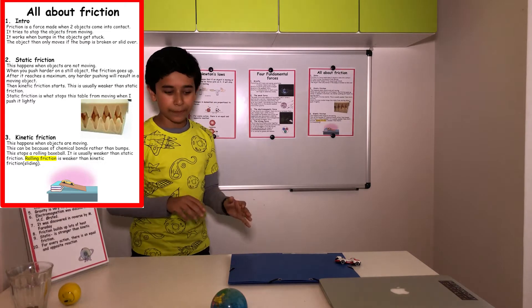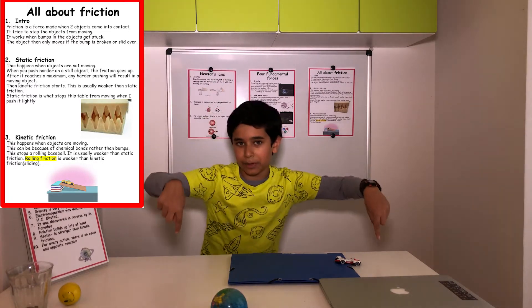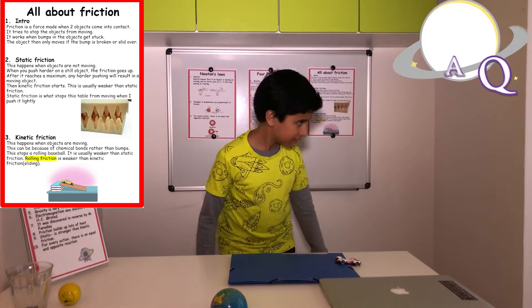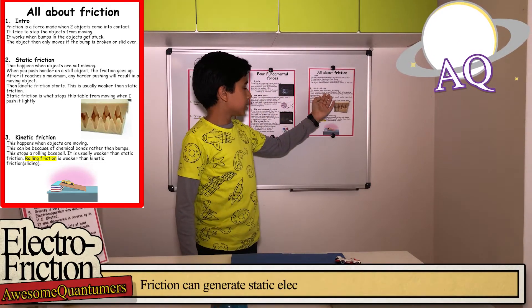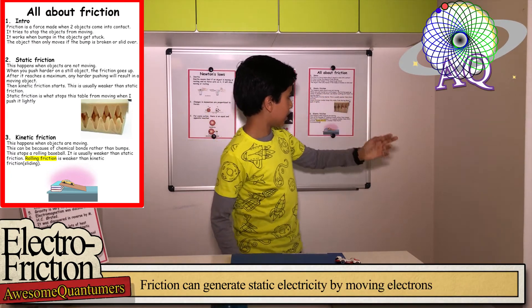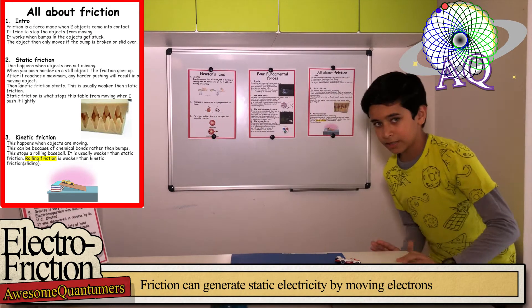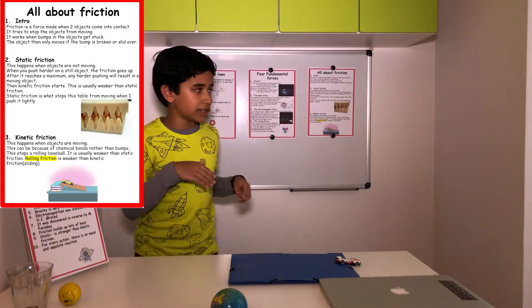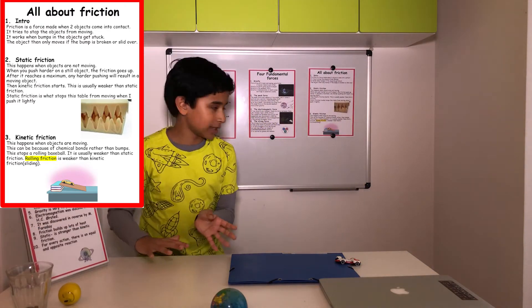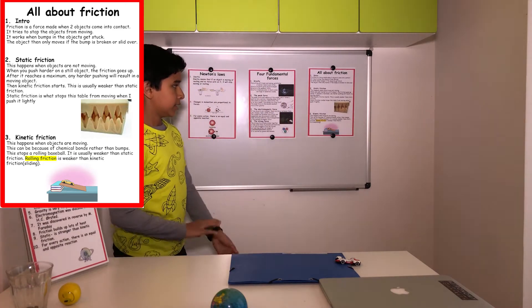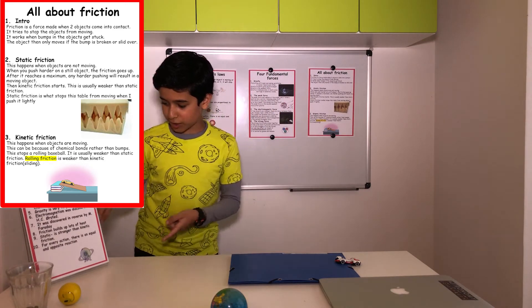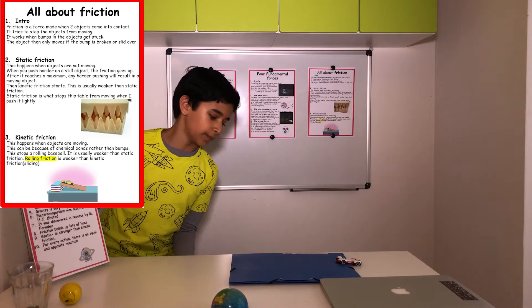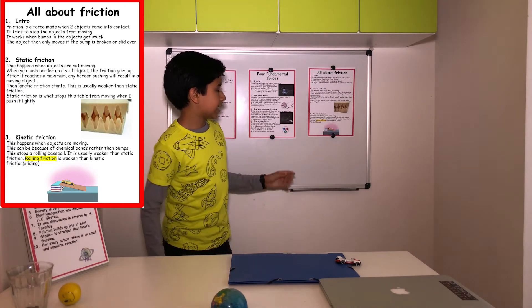Static friction. This happens when objects are not moving. This table isn't moving relative to the other object, the floor. When you push hard on a still object, there's friction. When you push harder, the friction goes up. Then it will reach a maximum and the object will start moving. And static friction is what stops this table from moving when I push lightly. I'm pushing. I'm actually pushing and it's not moving. That's static friction.